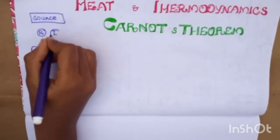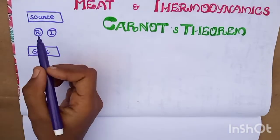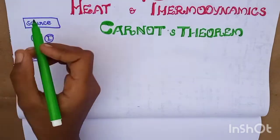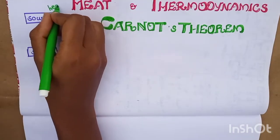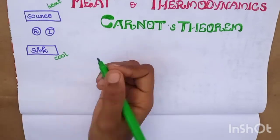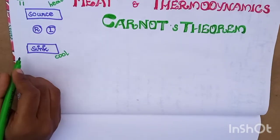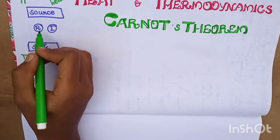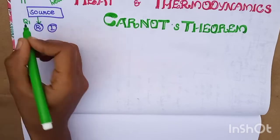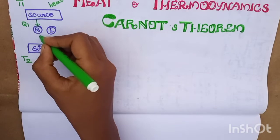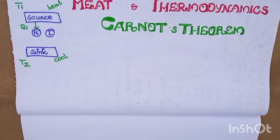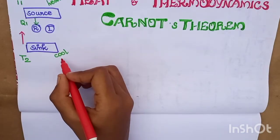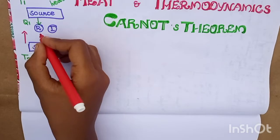Now one reversible engine is R, then the irreversible engine. The reversible engine absorbs and releases heat while the irreversible engine also operates between the source and sink.